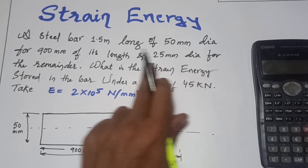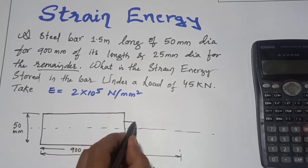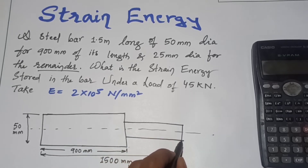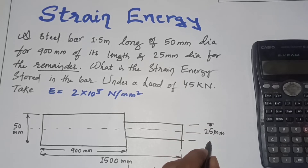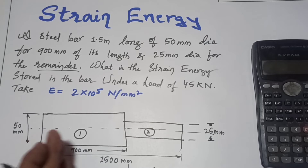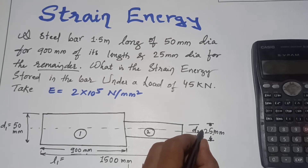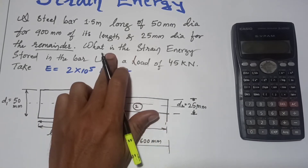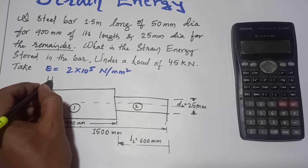The remaining 600 mm section has a diameter of 25 mm. So we have two elements: Element 1 has D1 = 50 mm and L1 = 900 mm; Element 2 has D2 = 25 mm and L2 = 600 mm. The strain energy stored in the bar needs to be calculated.